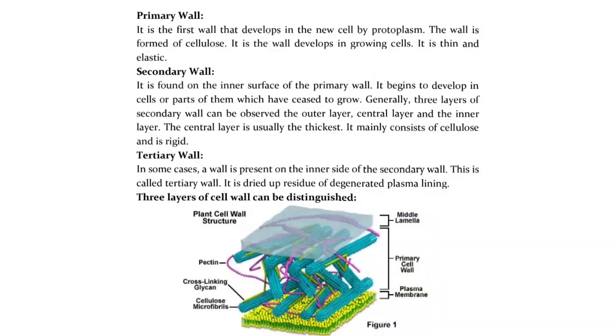In some cases, a wall is present on the inner side of the secondary wall. This is called the tertiary wall. It is the dried-up residue of the degenerated plasma lining.